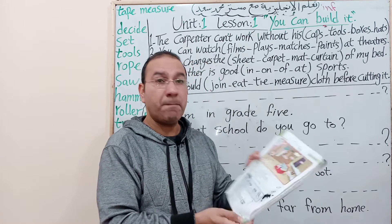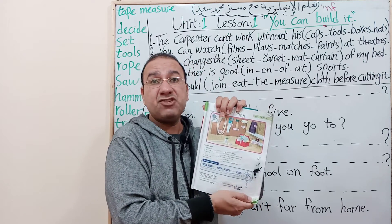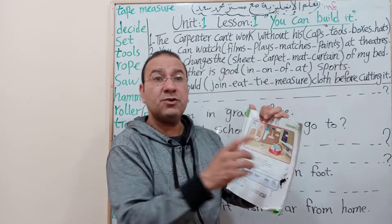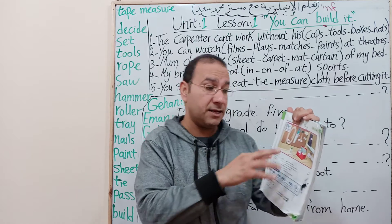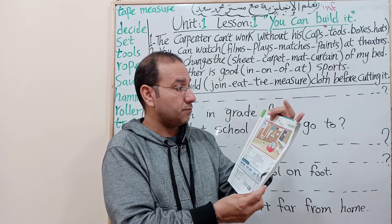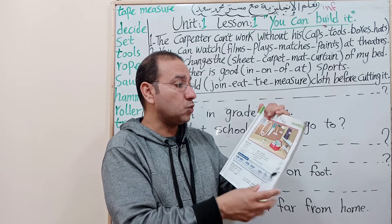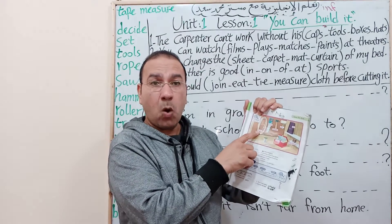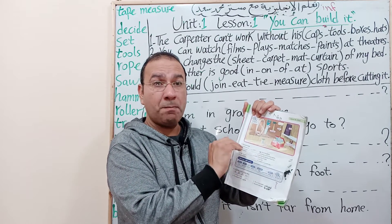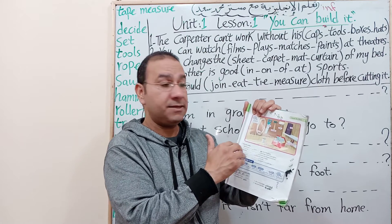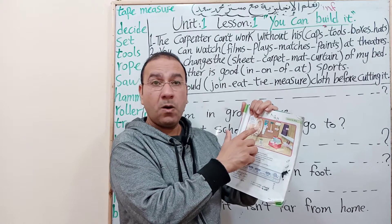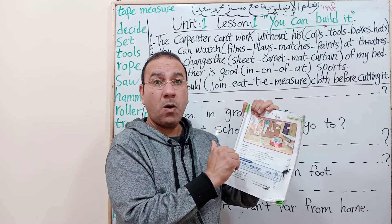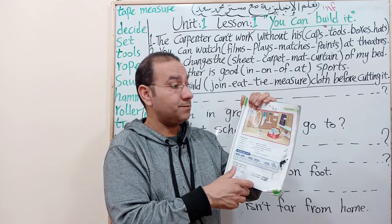Let's move to page nine. Open page nine with me. Listen and repeat - repeat after me. These are tools. Rope - R-O-P-E. Rope means حبل (rope). Saw - S-A-W. Saw means منشار (saw/handsaw).